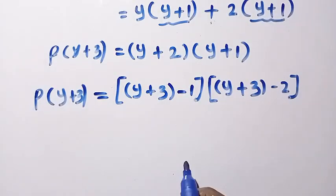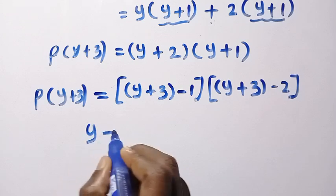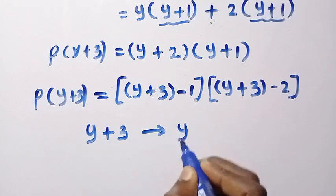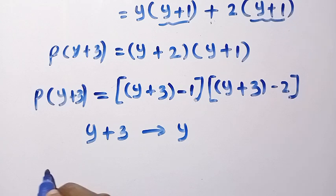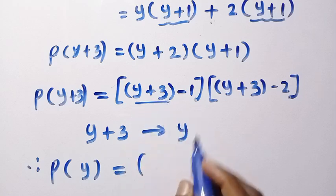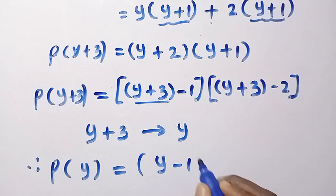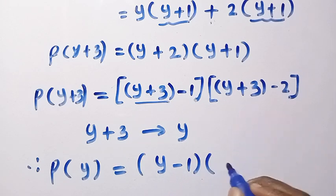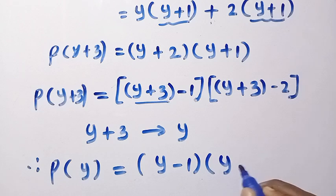Then by replacing y plus 3 with y. Therefore, P of y equals this has changed to y then minus 1 multiplied by also this is y minus 2.